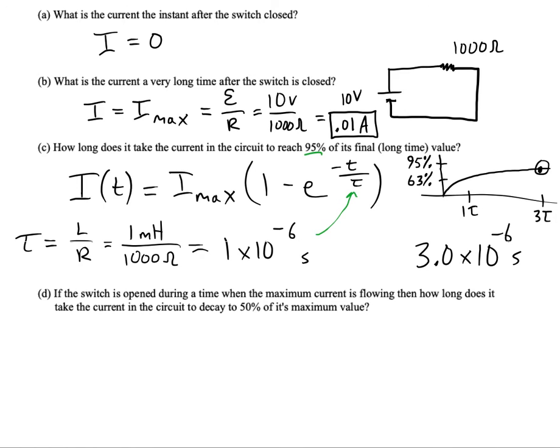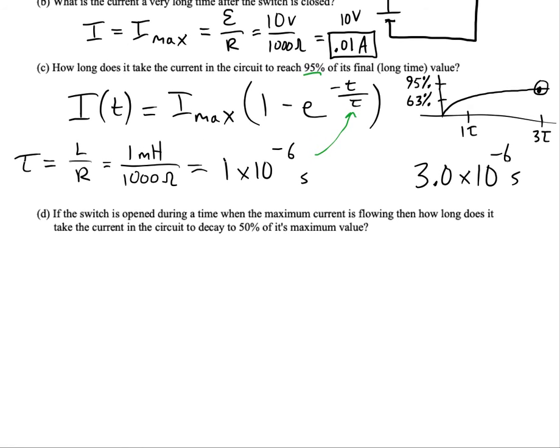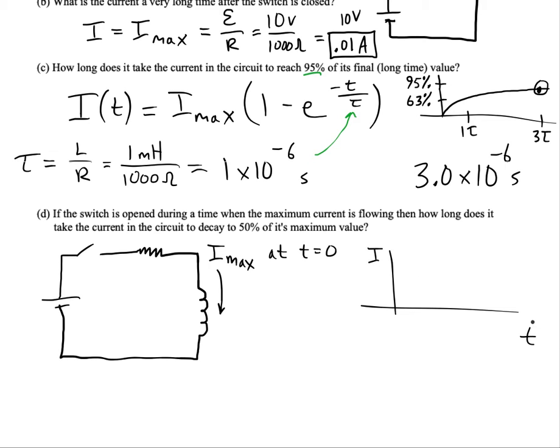The next question asks about decay in an LR circuit. So the thing about decay is that that takes time too. See the inductor, it resists any change in the circuit's current. So if current is flowing nicely at a given time, let's say it's flowing with the maximum value at t equals zero, and then somebody suddenly opens the switch. The funny thing about LR circuits is the current won't automatically stop. It's going to keep flowing and gradually decay instead.